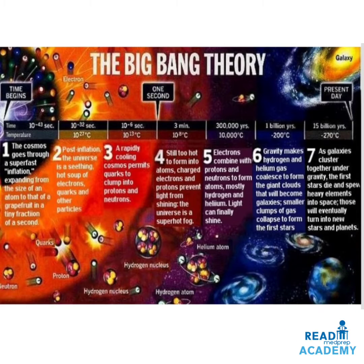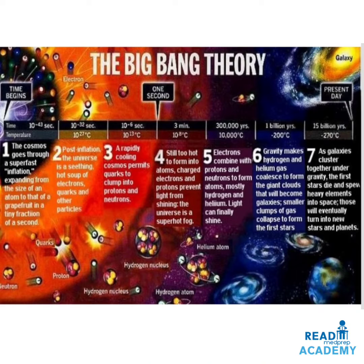In the big bang timeline, at 10 to the power of minus 43 seconds and at an extremely high temperature, the cosmos goes through super-fast inflation, expanding from the size of an atom to that of a grapefruit in a tiny fraction of a second. The second event, at 10 to the power of minus 32 seconds and a temperature of 10 to the power of 27 degrees centigrade, post-inflation of the universe occurred in a seething hot soup of electrons, quarks, and other particles.